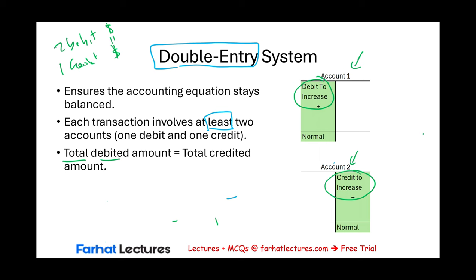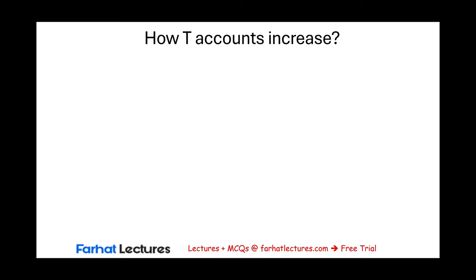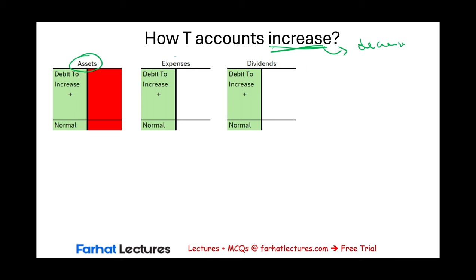We have not yet talked about when we debit to increase an account or credit to increase an account. This is the most important part of this lecture. I'm going to start with three accounts that work the same way: all assets, all expenses, and all dividends. Assets include cash, prepaid, accounts receivable, land, supplies, inventory — all assets increase by debiting them. When I say I'm debiting an asset, it means I am increasing that asset. The opposite side is how you decrease it.